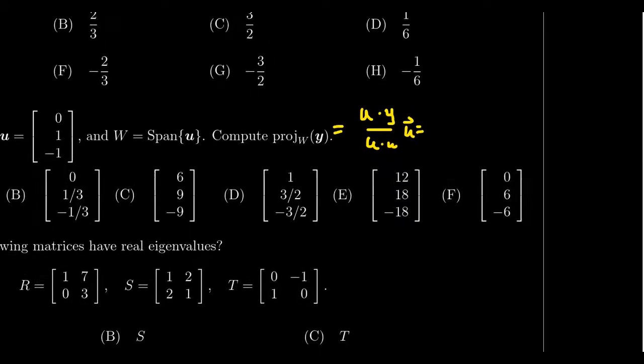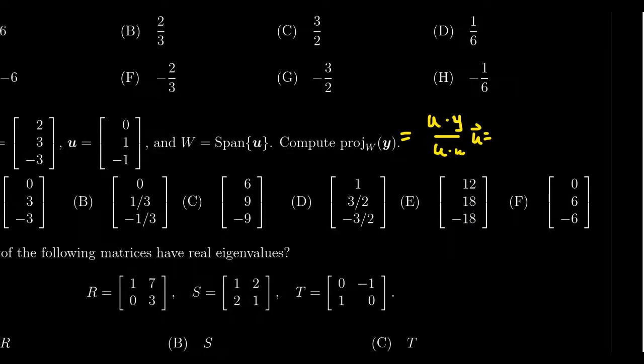For which case, then we see here that the inner product of y and u, we're going to get zero plus three plus three. Then divided by u dot u, in which case we're going to get zero plus one plus one.